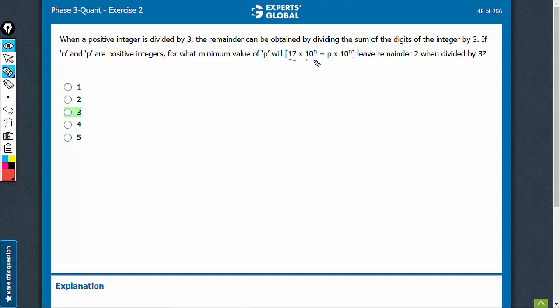17 × 10^n will expand into 17 followed by zeros. The number of zeros depends on the value of n. Similarly, p × 10^n will expand into p followed by zeros, where the number of zeros again depends on the value of n.